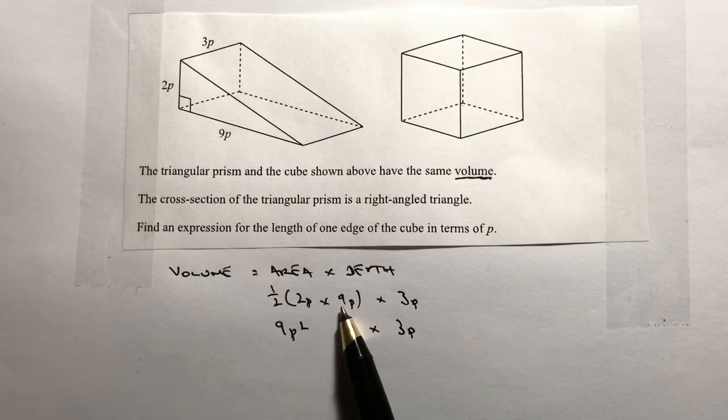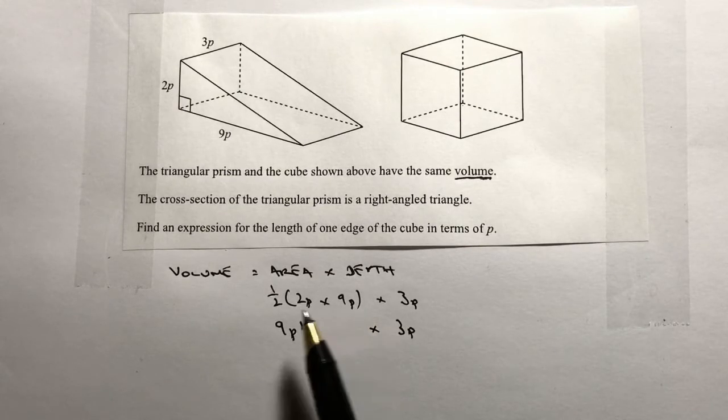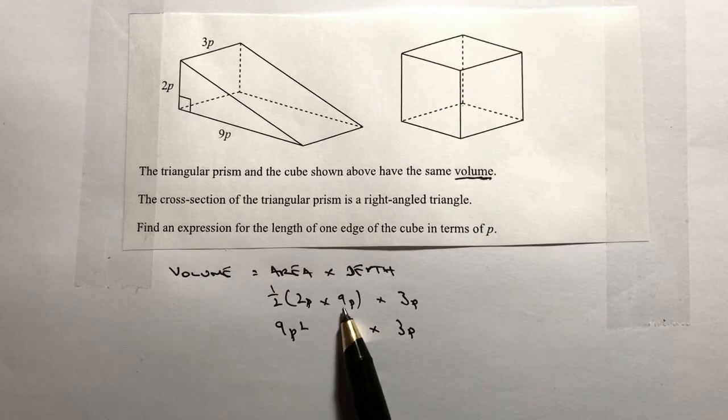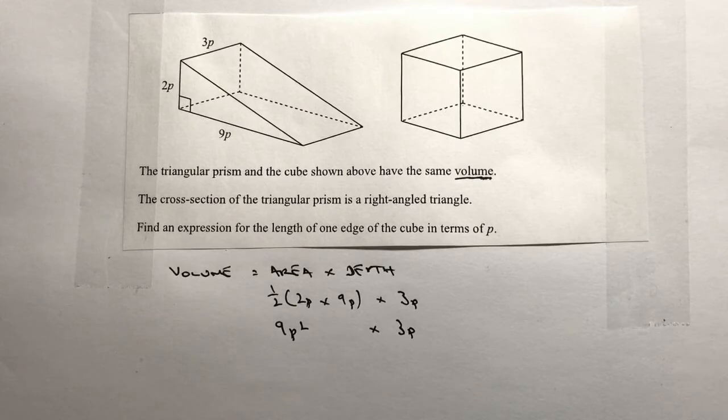Just take your time to think about that: 2p times 9p is 2 times 9 is 18, and p times p is p squared. Then we're looking at a half of it, so half of 18p squared is 9p squared. Multiply that by 3p and we're going to get...